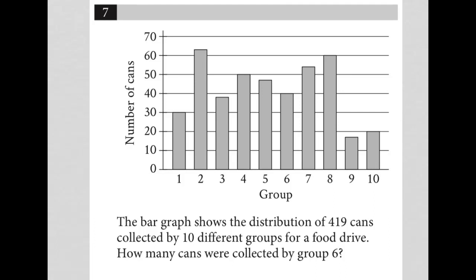So this question is a diagram question. We have a bar graph here. Our y-axis is number of cans, our x-axis is group. We have group numbers, and in each group number, there's a certain number of cans.